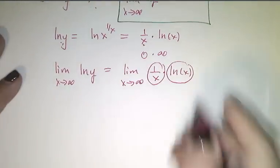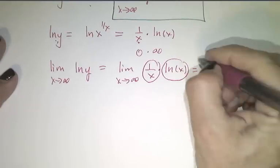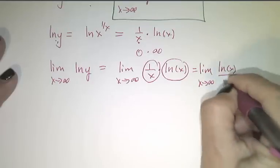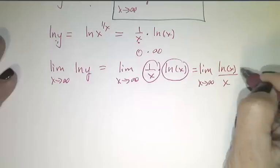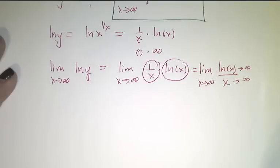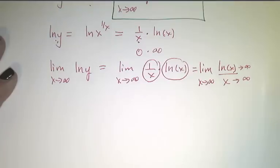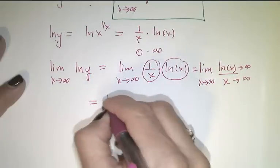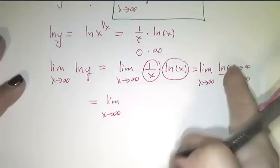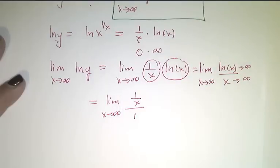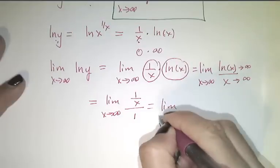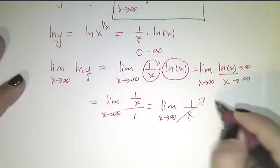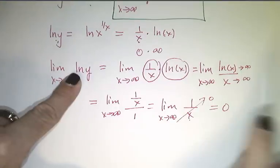I'm going to switch it to an indeterminate quotient. The limit as x goes to infinity of the natural log of y equals the limit as x goes to infinity of ln(x) over x. The top still goes to infinity and the bottom goes to infinity, so this is an indeterminate quotient. L'Hôpital's rule applies, giving us the limit as x goes to infinity of 1 over x over 1, which is just 1 over x. As x gets big, this goes to 0. So this limit equals 0.